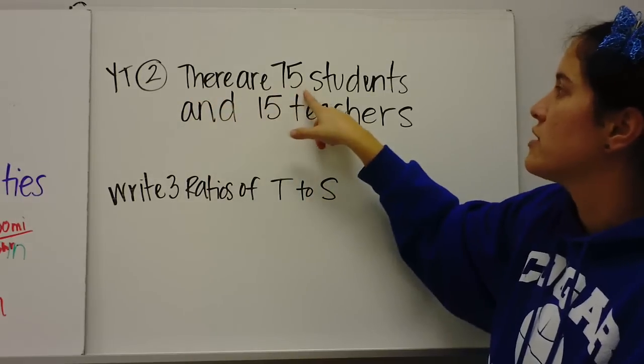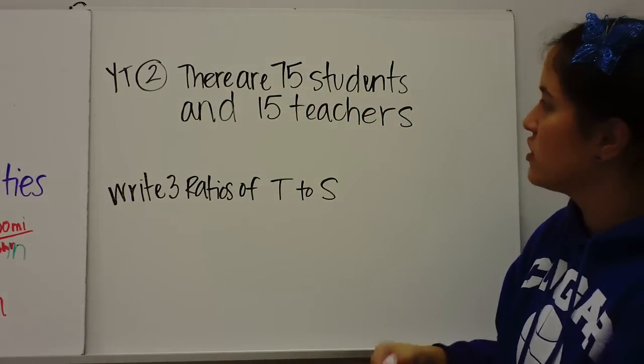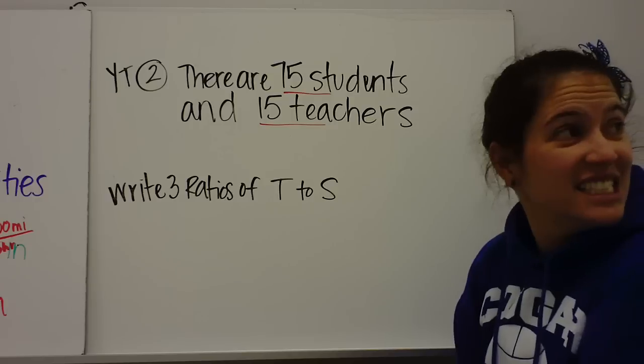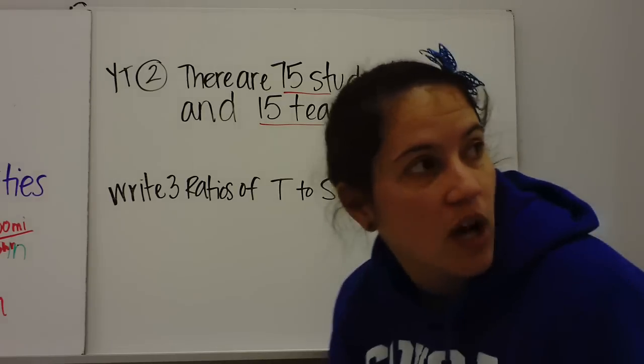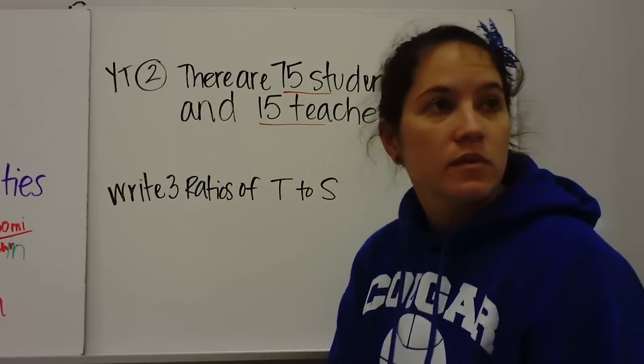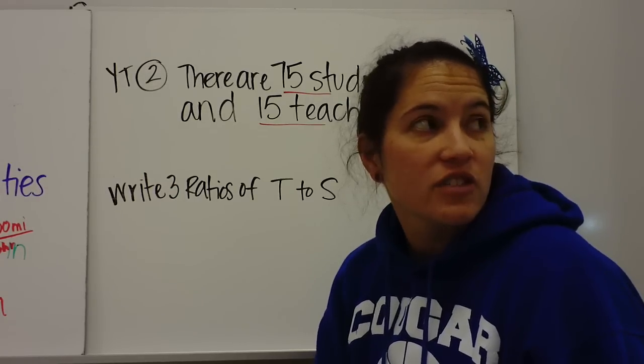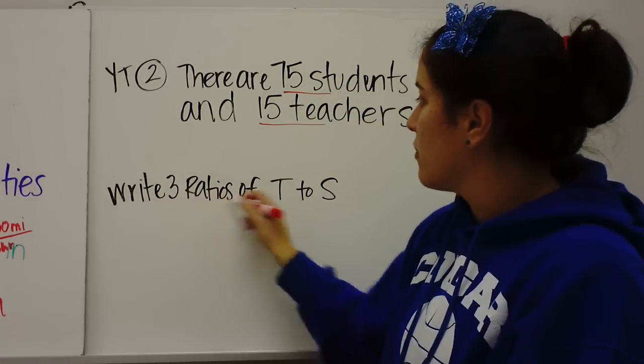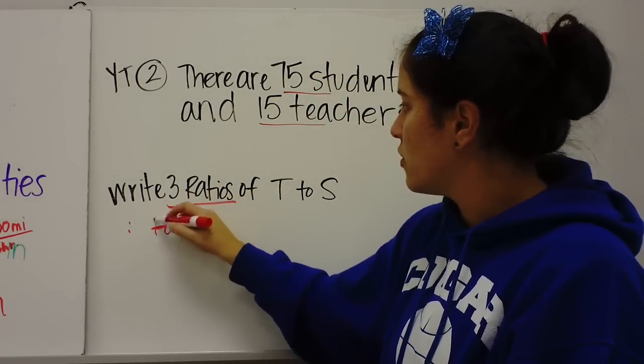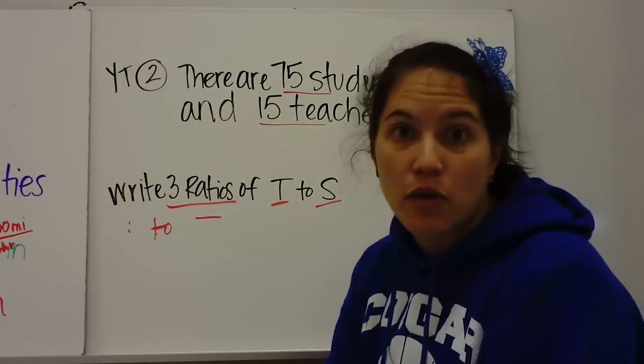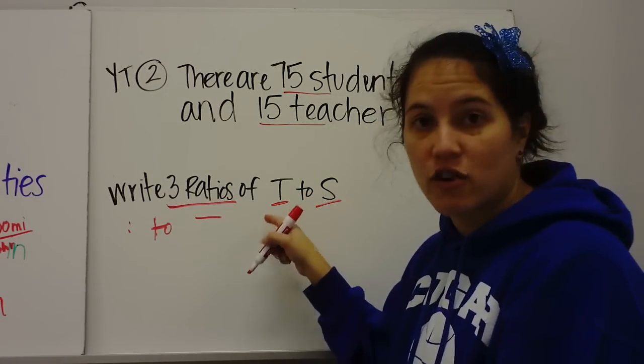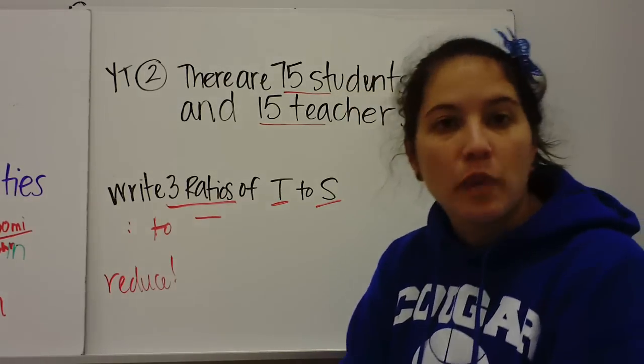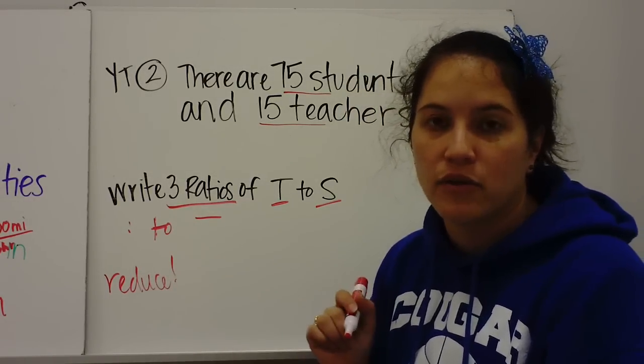All right. So you try this one. There are 75 students and 15 teachers. Notice, 75 students and 15 teachers. So write three ratios, all three ways, colon, two, fraction bar, of teachers to students. Notice teachers to students. You have to start with teachers. Teachers to students. And make sure you reduce. So pause the video, work on this problem, and then press play when you're ready for me to go over it.